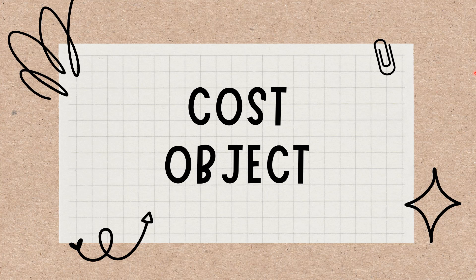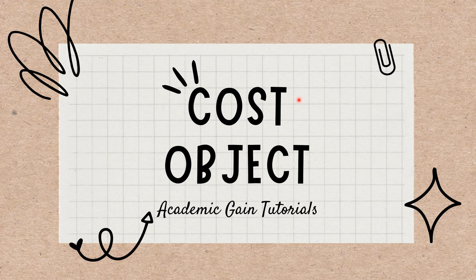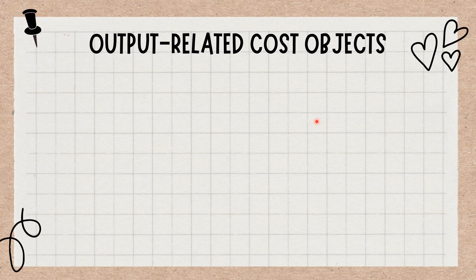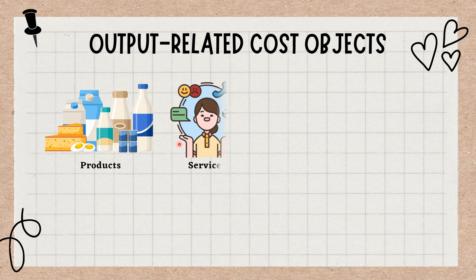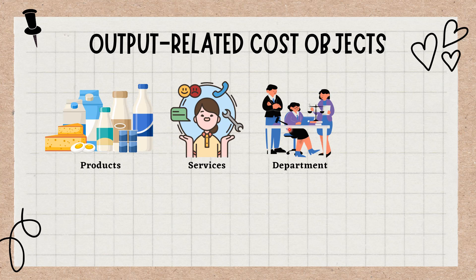In managerial accounting, cost objects are a critical concept that helps organizations track and control costs. A cost object is anything for which costs are collected, such as a product, service, department, project, or customer.